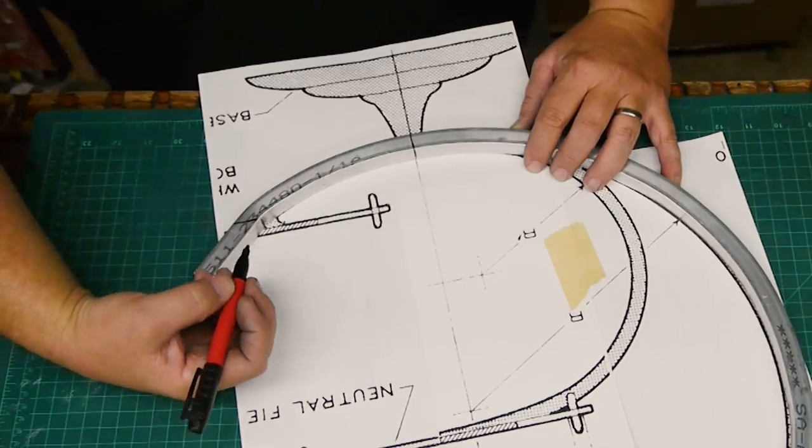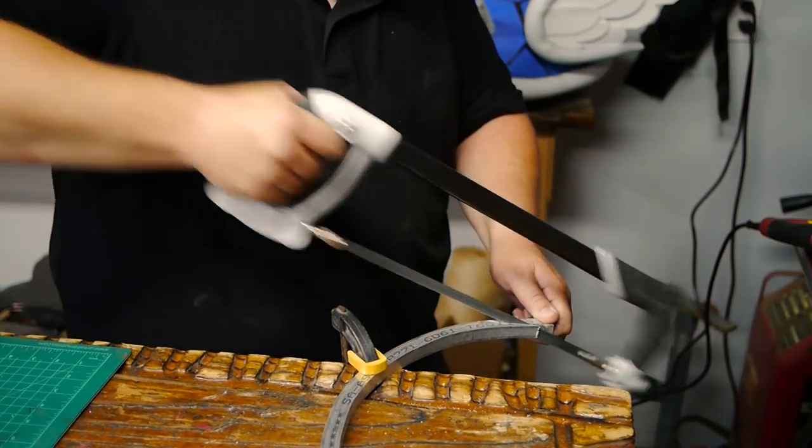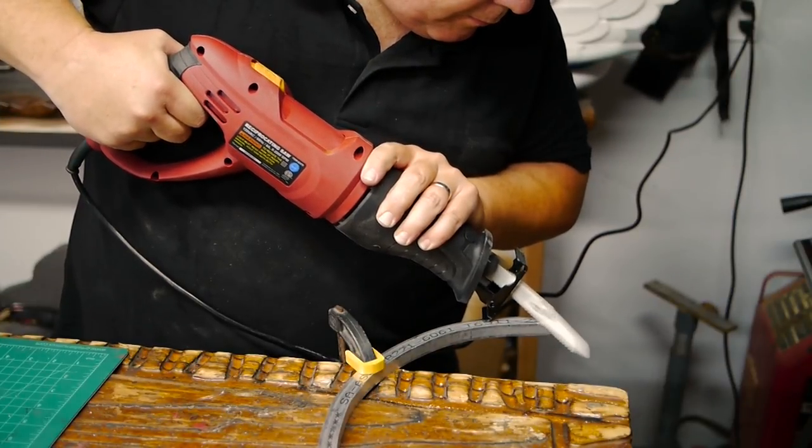Then I needed to trim the ends of each of the curves. Now my bandsaw only has a wood blade, so I used a hacksaw and then finally a reciprocating saw to make all the cuts.